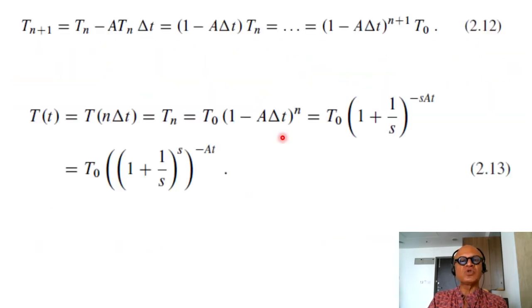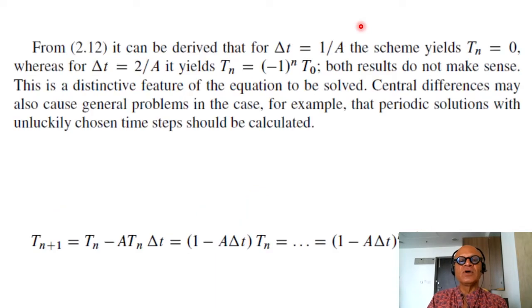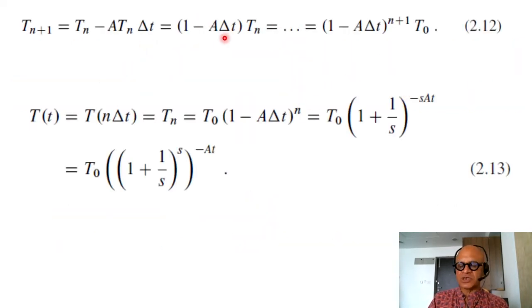So from equation 2.12 here it can be derived that for delta T equals 1/A the scheme yields T_n equals 0 whereas for delta T equals 2/A it yields T_n is (-1)^n T_0. Both results do not make any sense if you just look at this discretization.